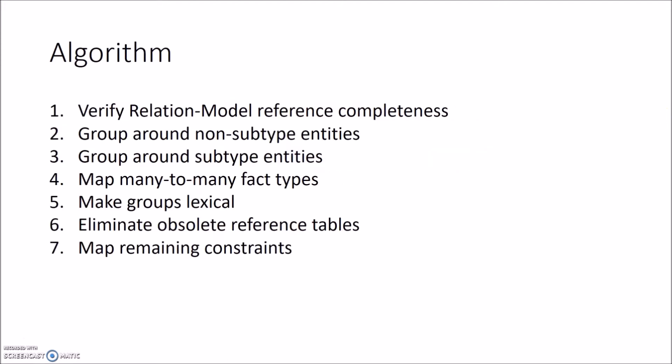This is the 7-step algorithm. The first step is to verify the relational model reference completeness of the original ORM schema. The second step is to group around non-subtype entities in the schema. The third step is to group around the subtype entities. As the fourth step, we are going to map all the many-to-many fact types into the relational database schema. The fifth step will ensure that everything will be lexical. The sixth step is to eliminate all the obsolete reference tables that will occur. And as the last step, we will map all the remaining constraints into the relational database schema.